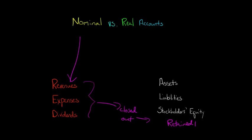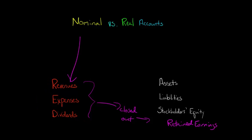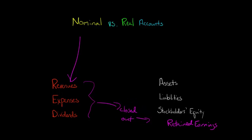Because we only track revenues, expenses, and dividends for a single year or quarter — we track them for a certain period of time and then zero them out and close them out to retained earnings — we also call them temporary accounts. So nominal accounts are also known as temporary accounts.